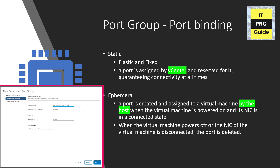The port is created only when the virtual machine is powered on and its network interface card is in a connected state. When the virtual machine powers off or the NIC is disconnected, the port is deleted — so there is no guaranteed connectivity at all times. You can assign a virtual machine to a distributed port group with ephemeral port binding on both ESXi and vCenter, giving you flexibility to manage virtual machine connections even when vCenter is down. However, ephemeral port groups must be used only for recovery purposes, when you want to provision ports directly on the host by bypassing vCenter Server.